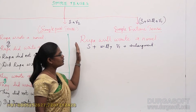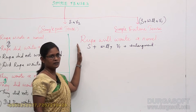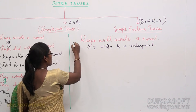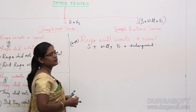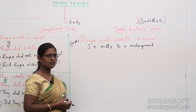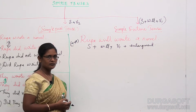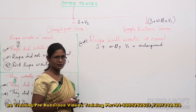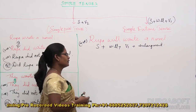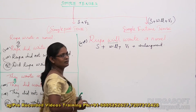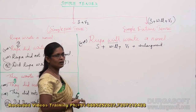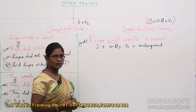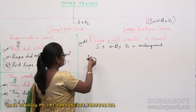We can directly deal with the example itself. We all know that 'Rupa will write a novel' is a positive sentence. How can you convert this into a negative sentence? Very simple technique: just add 'not' in the sentence after the helping verb. Where is the helping verb? It is 'will.' So if you add 'not' beside will, automatically the complete sentence gets converted into a negative sentence.